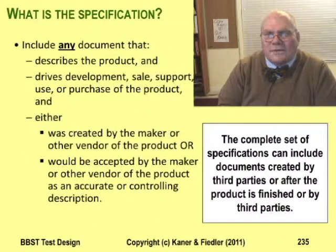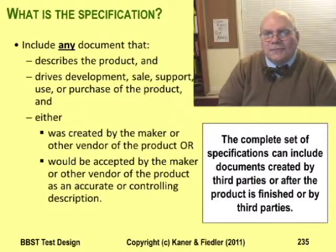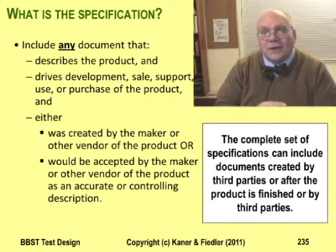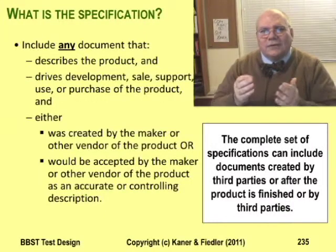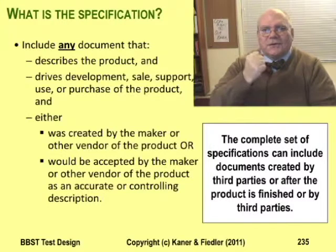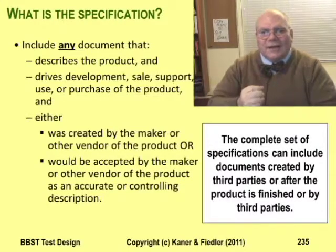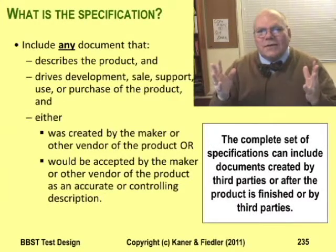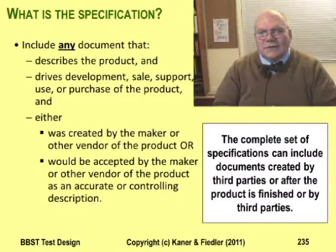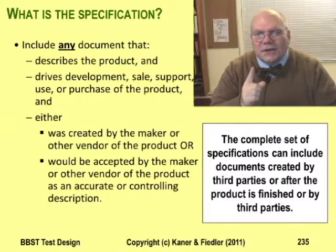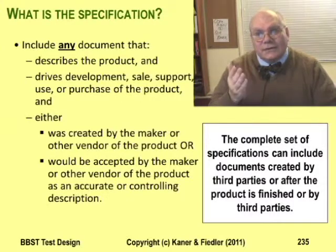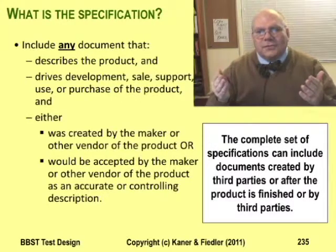Textbooks often describe product development as contract-based. In their simplified textbook world, a customer makes a contract with your company to create a product, and that contract includes a thick document with 'specifications' stamped on the front cover — a document that has everything you need to know about the product. Your company's task, according to the textbook, is to develop a product that does what this specification says it should do, and the testing task is to verify that the program actually conforms to that specification.